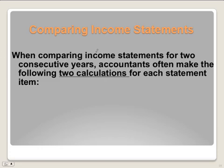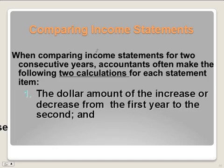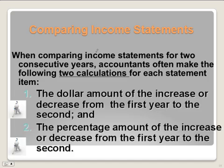So, comparing income statements. When comparing income statements for two consecutive years — that's one year right after the other — accountants often make the following two calculations for each statement. You're often looking to see if there's an increase in expenses or an increase in sales. As an accountant, you need to advise your managers and your owner how they can improve the operation. The first calculation is the dollar amount of the increase or decrease from the first year to the second — how much in dollars did our sales or expenses go up? The second is the percent amount of that increase or decrease.